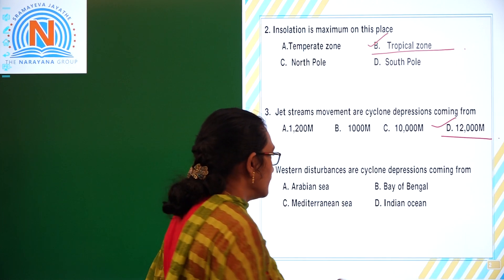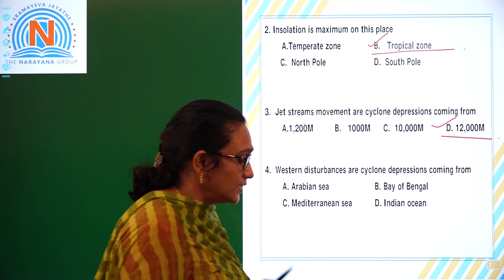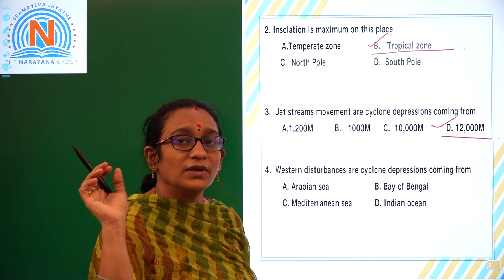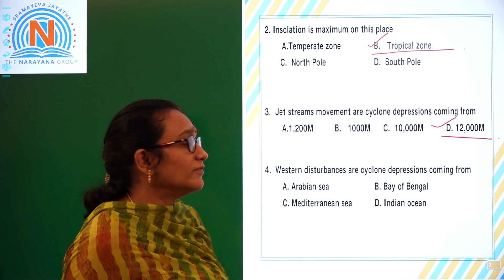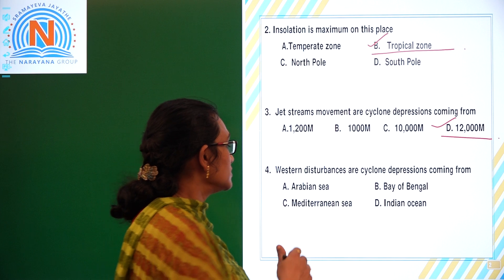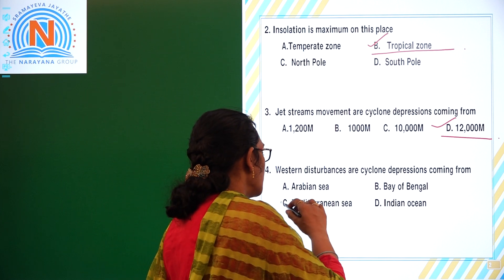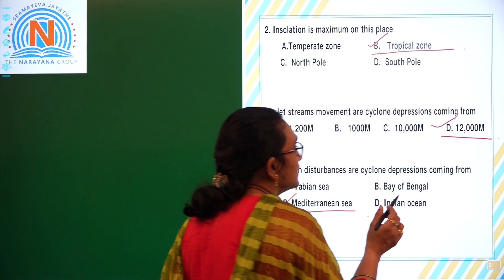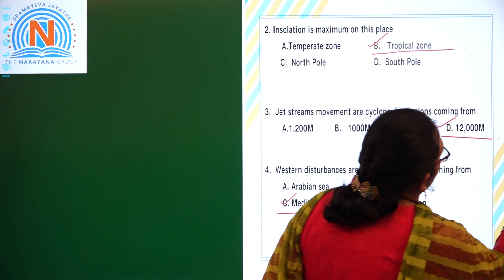Next: western disturbances are cyclone depressions coming from where? Western disturbances are coming from the Mediterranean Sea.